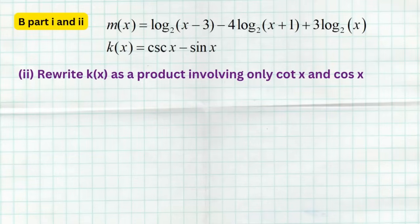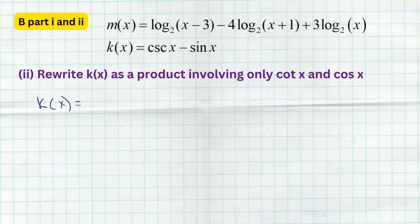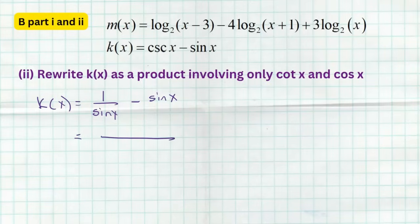In part two of Section B, you're asked to reduce or simplify the second function k(x). Here we're asked to rewrite k(x) as a product involving only cotangent and cosine. You need to know your trig identities — they won't be on any formula sheet, so you have to memorize them. Using the reciprocal identity, cosecant can be written as 1/sin(x) minus sin(x). Get a common denominator of sin(x): the first term stays as 1, and the second term becomes sin²(x), giving (1 − sin²(x)) / sin(x).